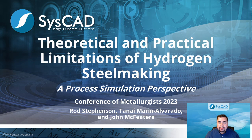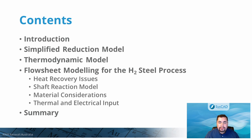We will start by providing an introduction to the topic, followed by a simplified reduction model and details of the thermodynamic model used for this simulation. We will discuss practical implications found during the flow sheet modeling of hydrogen and steel process, such as heat recovery issues, the shaft reaction model, some material considerations, and thermal and electrical input implications, to finalize with summary and conclusions.